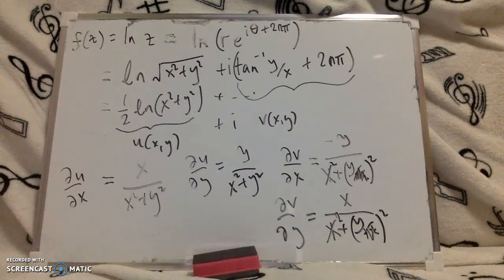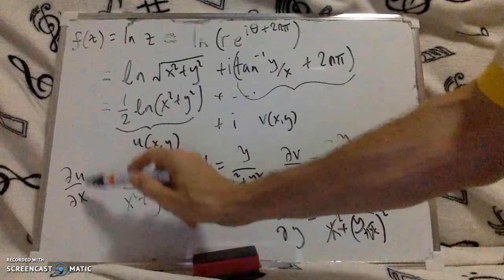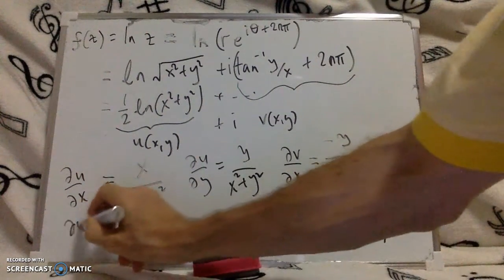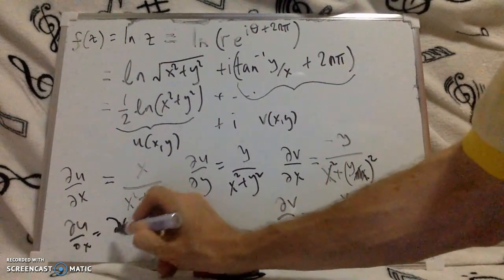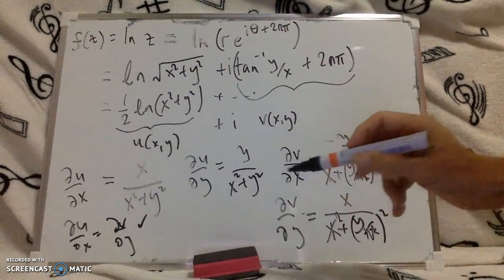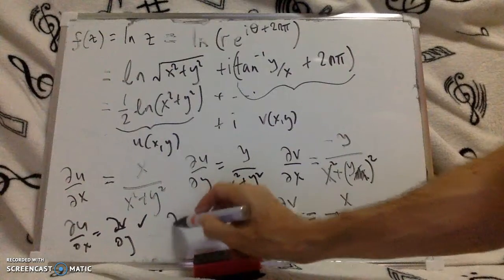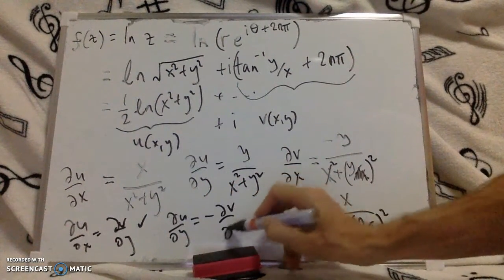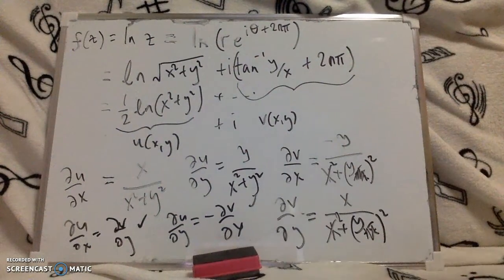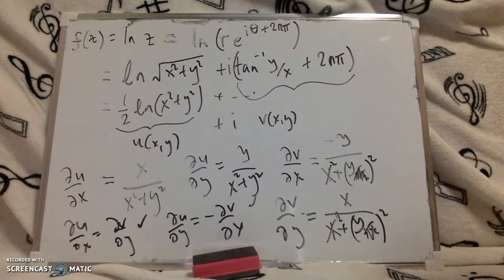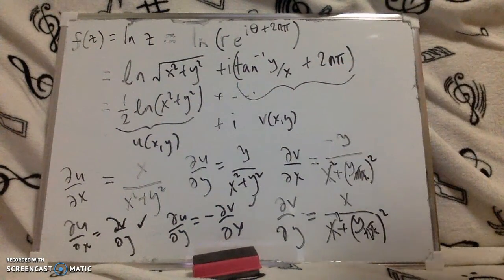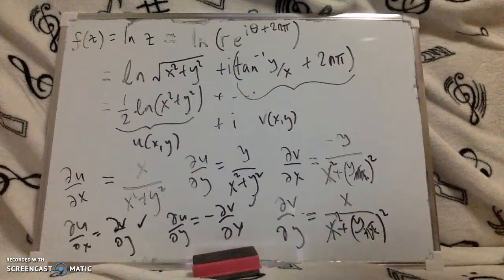So to check the Cauchy-Riemann, Cauchy-Riemann says that du by dx is equal to dv by dy, so that checks out, tick. And also that du by dy is equal to minus dv by dx, which we see is also correct. So that shows that any branch, I can choose n to be anything, the log function is analytic.